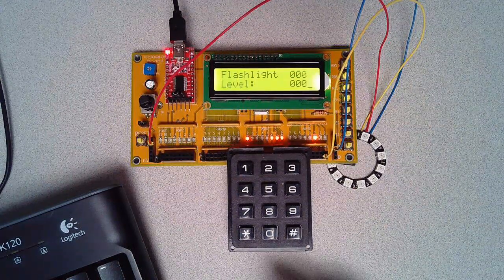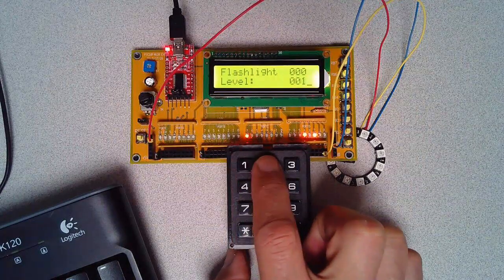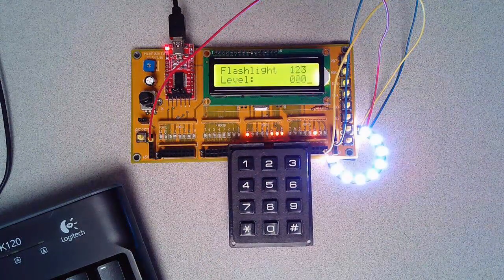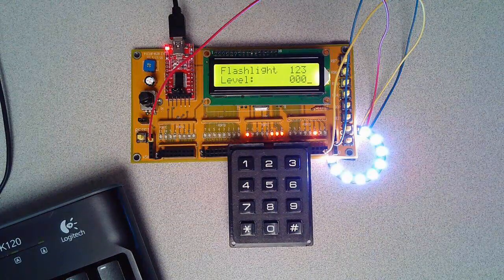What I'm going to do is input two numbers, like 1, 2, 3, then hit pound. If I do that, this is the brightness of 123.